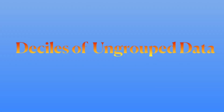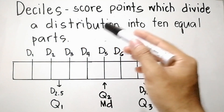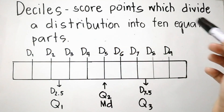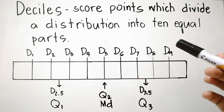Hi everyone, welcome back to my YouTube channel. Today we will discuss deciles of ungrouped data, which is under measures of position or the quantile. Deciles are the score points which divide a distribution into 10 equal parts.